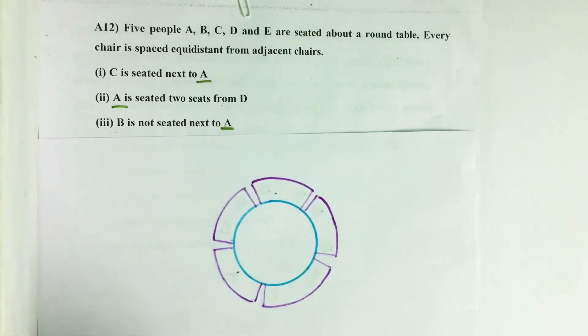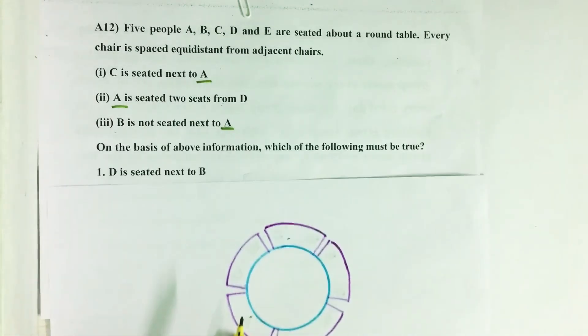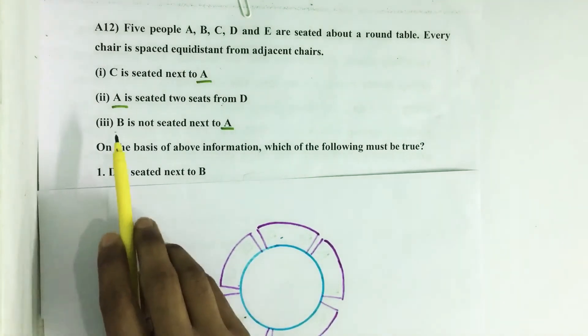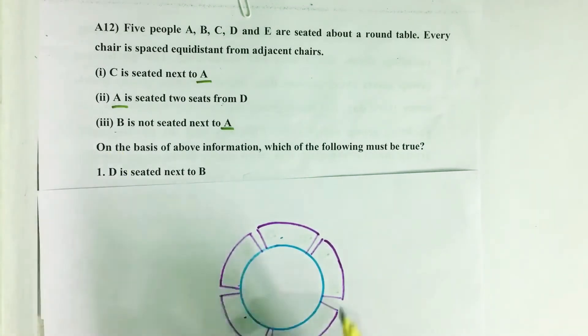Five people A, B, C, D and E are seated around a round table. Every chair is spaced equidistant from adjacent chairs. C is seated next to A, A is seated two seats from D, B is not seated next to A.